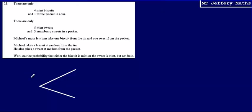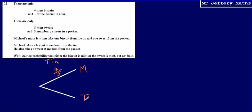The first thing to do is write down the probabilities when Michael selects from the tin. He could either choose a mint biscuit or a toffee biscuit. The probability that he chooses a mint biscuit is four fifths, and the probability that he chooses a toffee biscuit is one fifth.